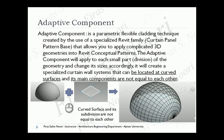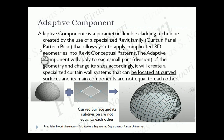Based on my point of view, it's a parametric flexible cladding technique created by the use of a very specialized Revit family called 'curtain panel pattern base.' This allows you to apply complicated 3D geometries or entities to any type of Revit conceptual pattern. The adaptive component will apply to each small part or division of the geometry and change its size accordingly.